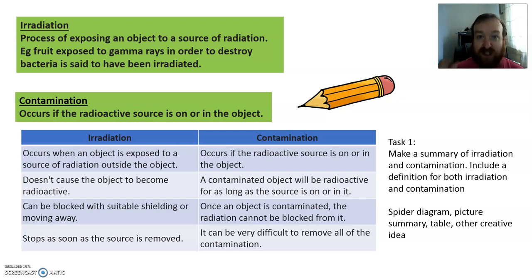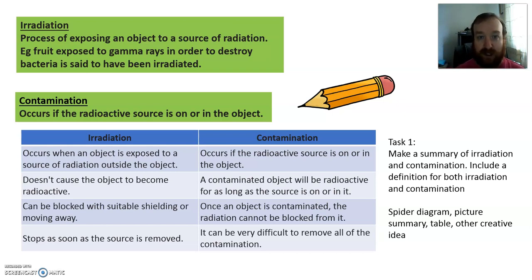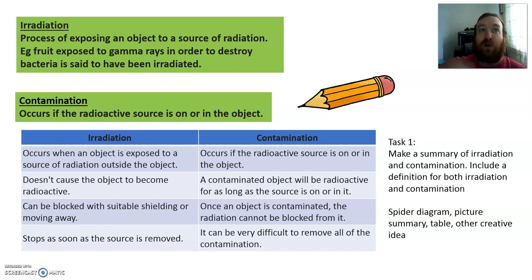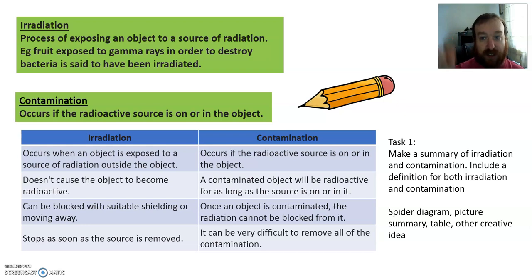Contamination is when the actual source of the radiation is on the object or in the object. So if that source producing the gamma rays was broken and landed on the fruit, the actual source touching the fruit would contaminate the fruit. Contamination is when it's touching; irradiation is when the radiation travels to the object.